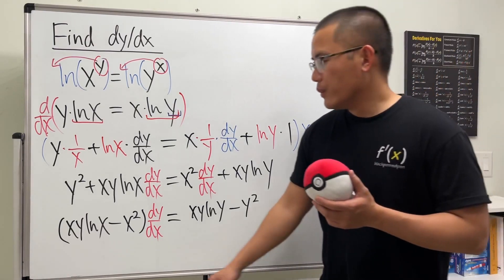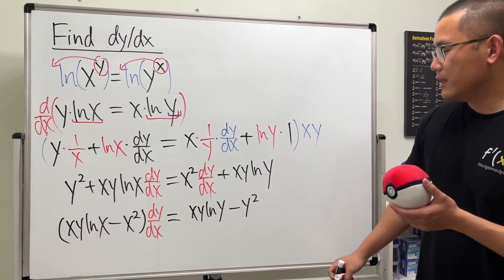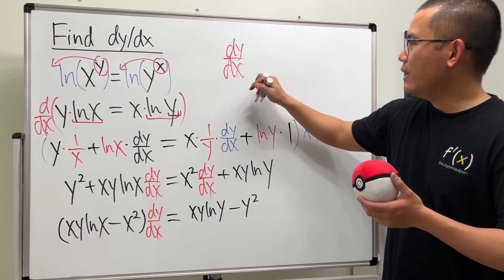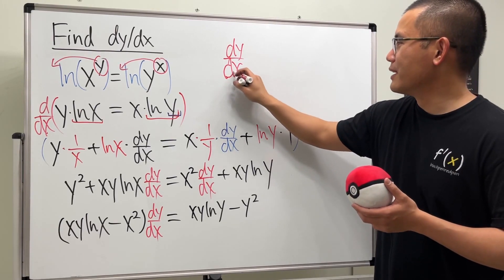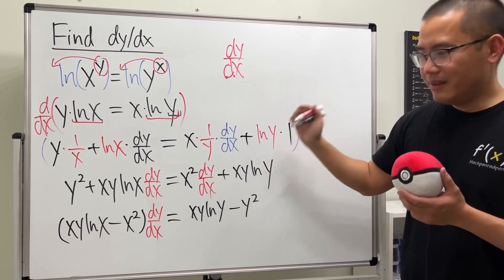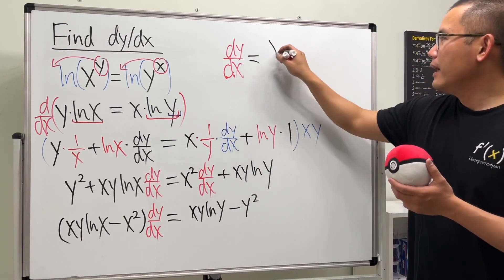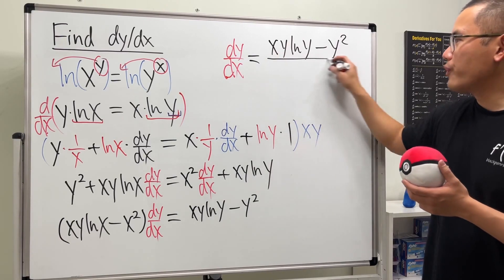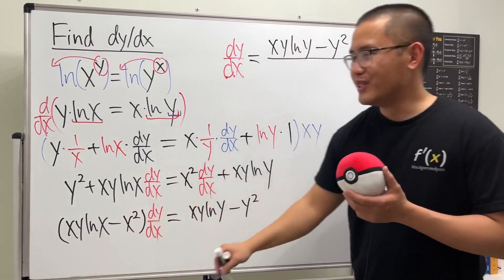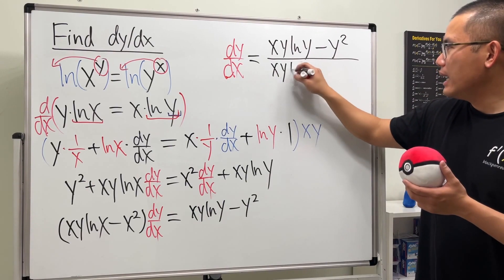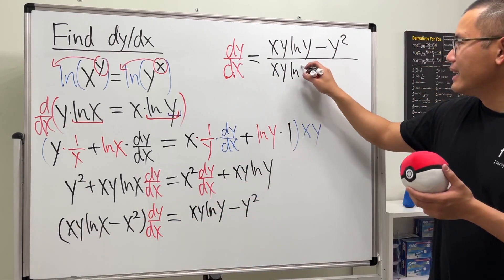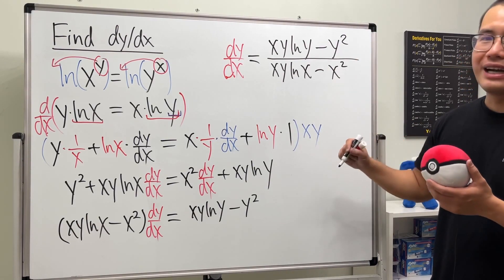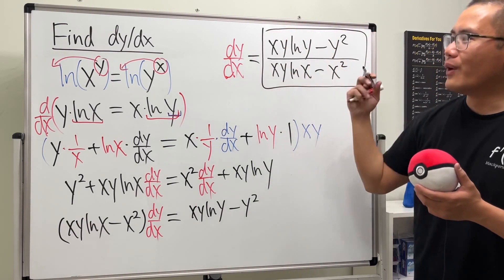We can just divide both sides, and we're done. So finally, dy/dx is equal to (xy·ln(y) minus y squared) over (xy·ln(x) minus x squared). That's the answer.